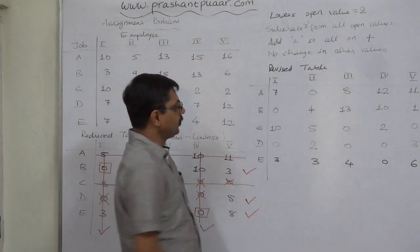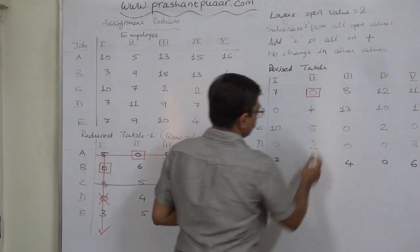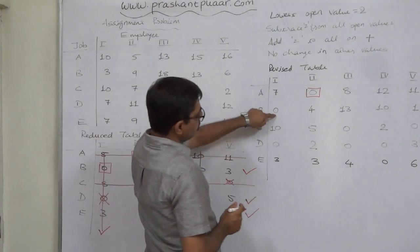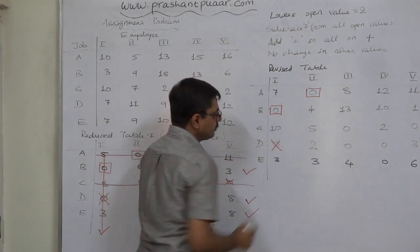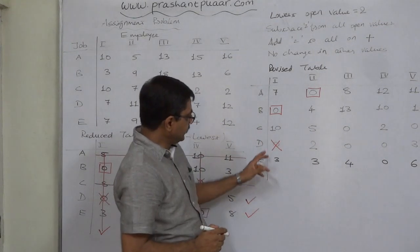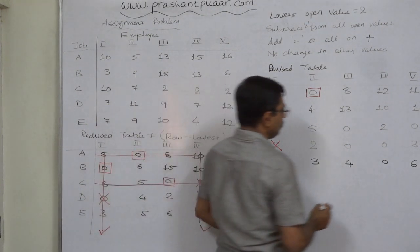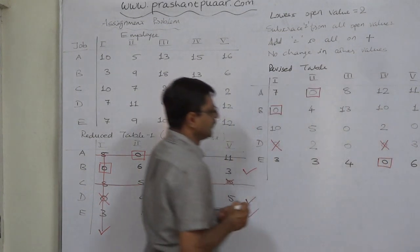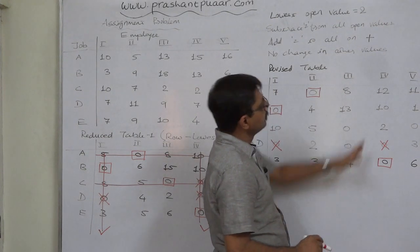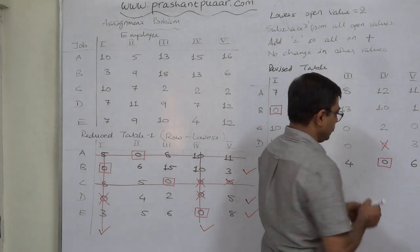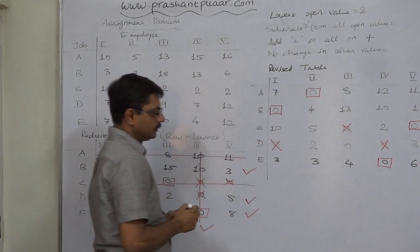With the revised table, we again apply the assignment steps. The first row has a single zero — make assignment, no other zeros in the column to cancel. Row B also has a single zero — make assignment. Row C has two zeros, row D has three zeros even after cancellation there are two zeros. Row E has only one zero — make assignment. Now for columns: columns 1, 2, 4 are already assigned; column 5 has a single zero — make assignment and cancel other zeros in the same row.